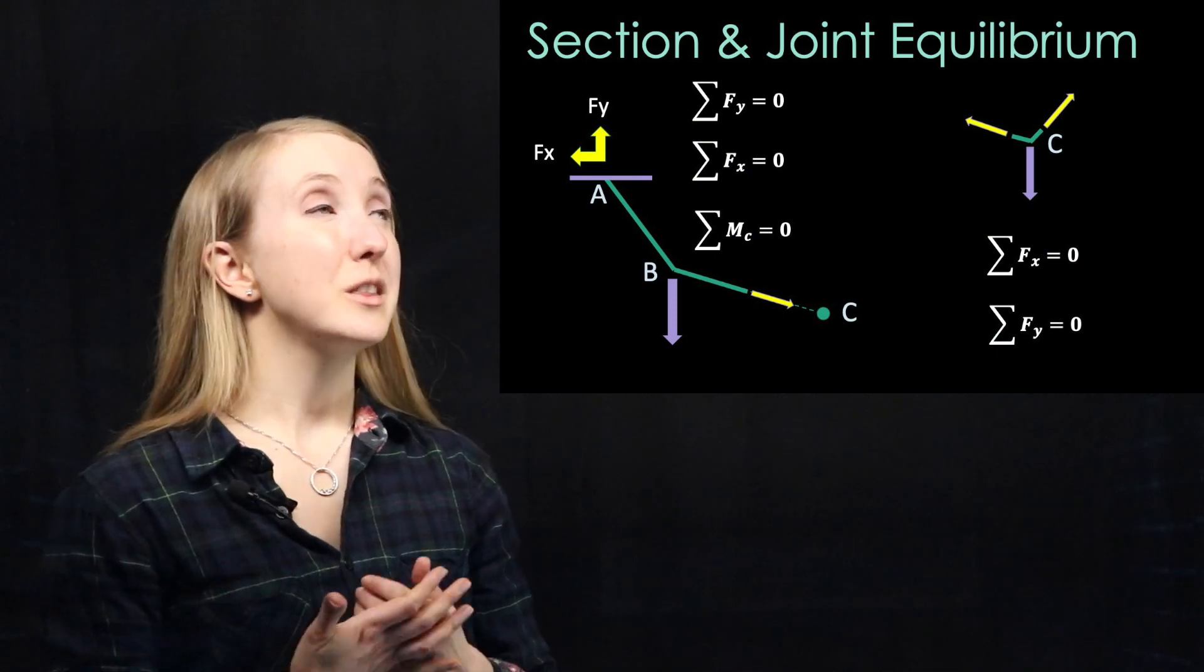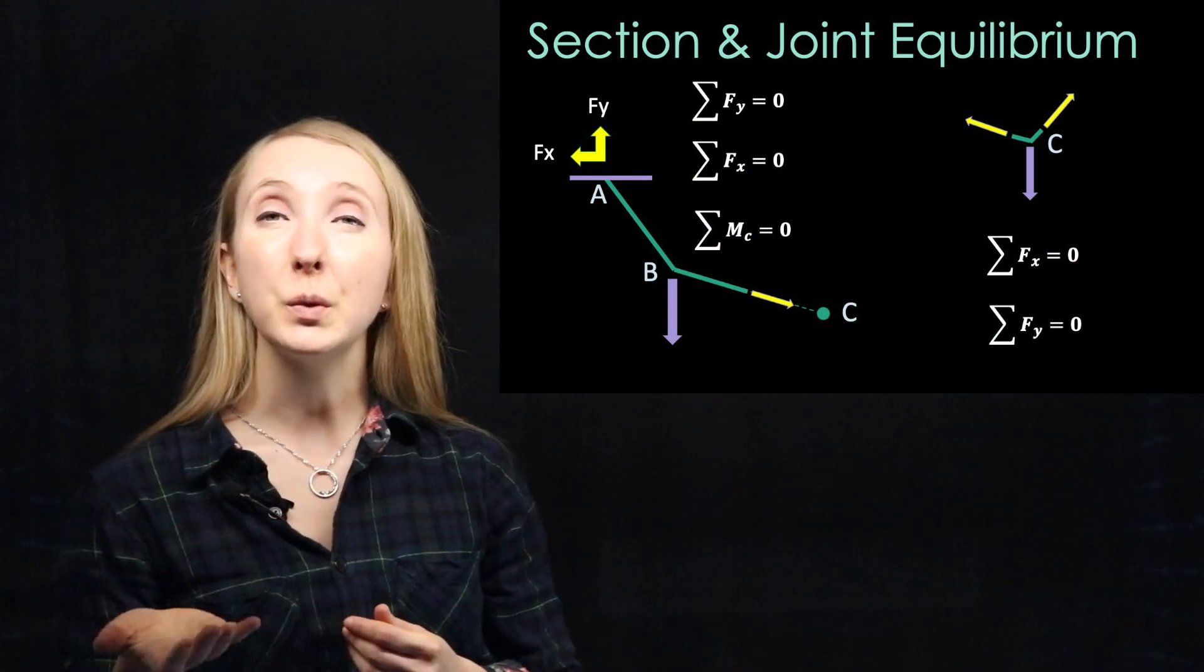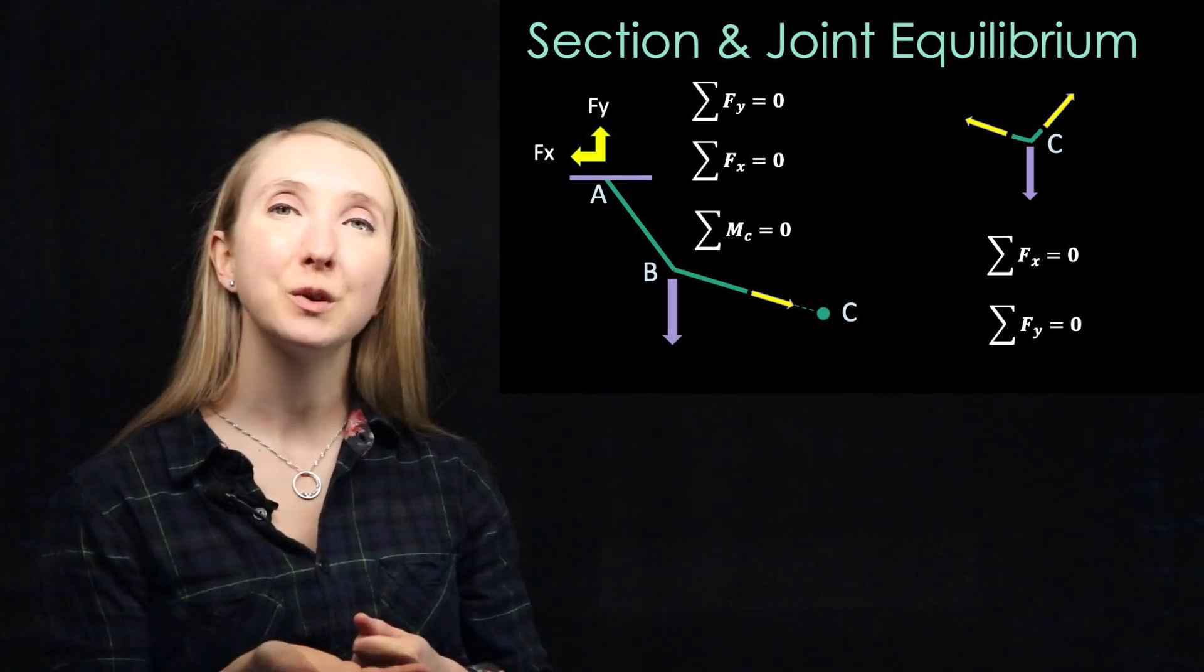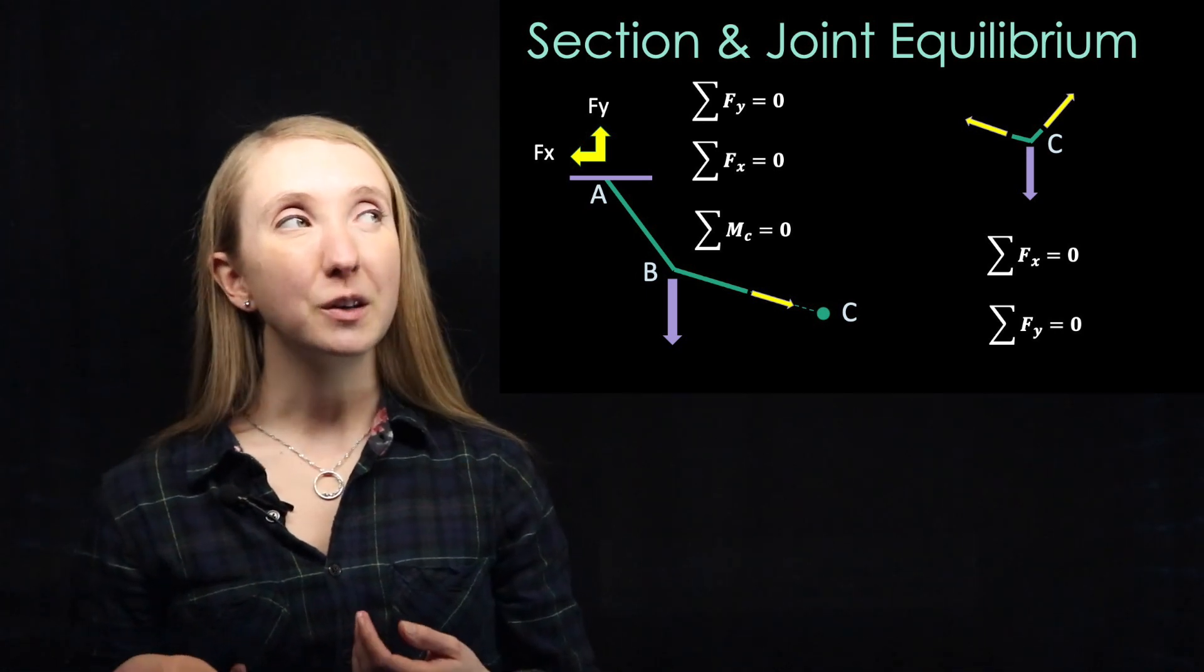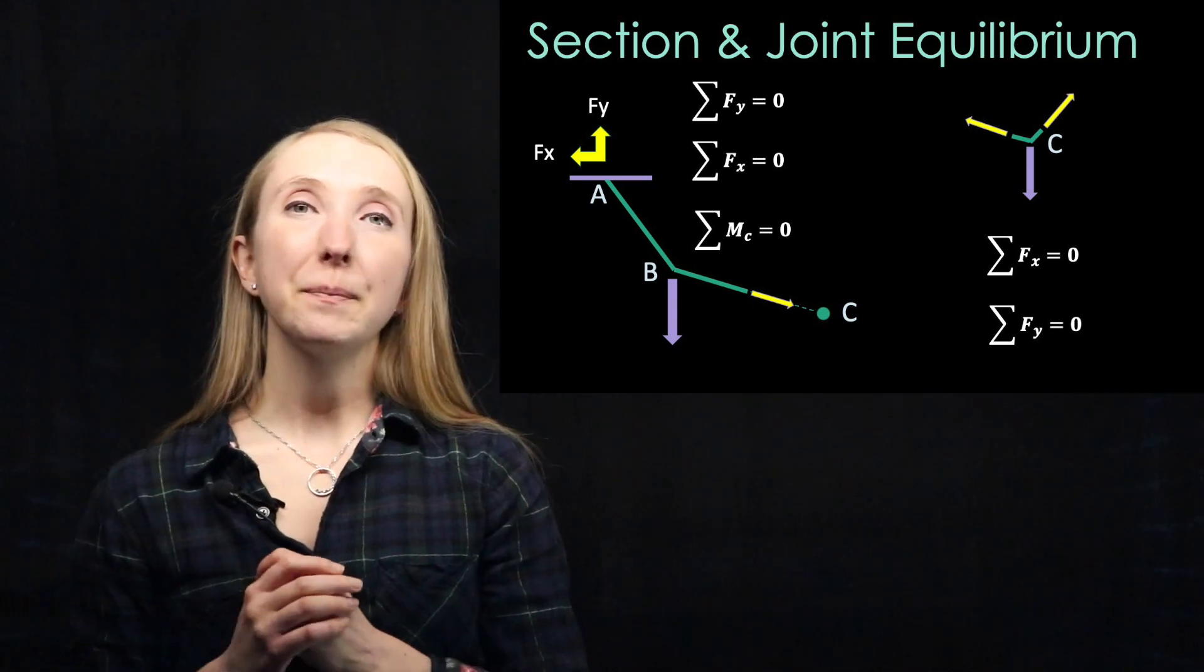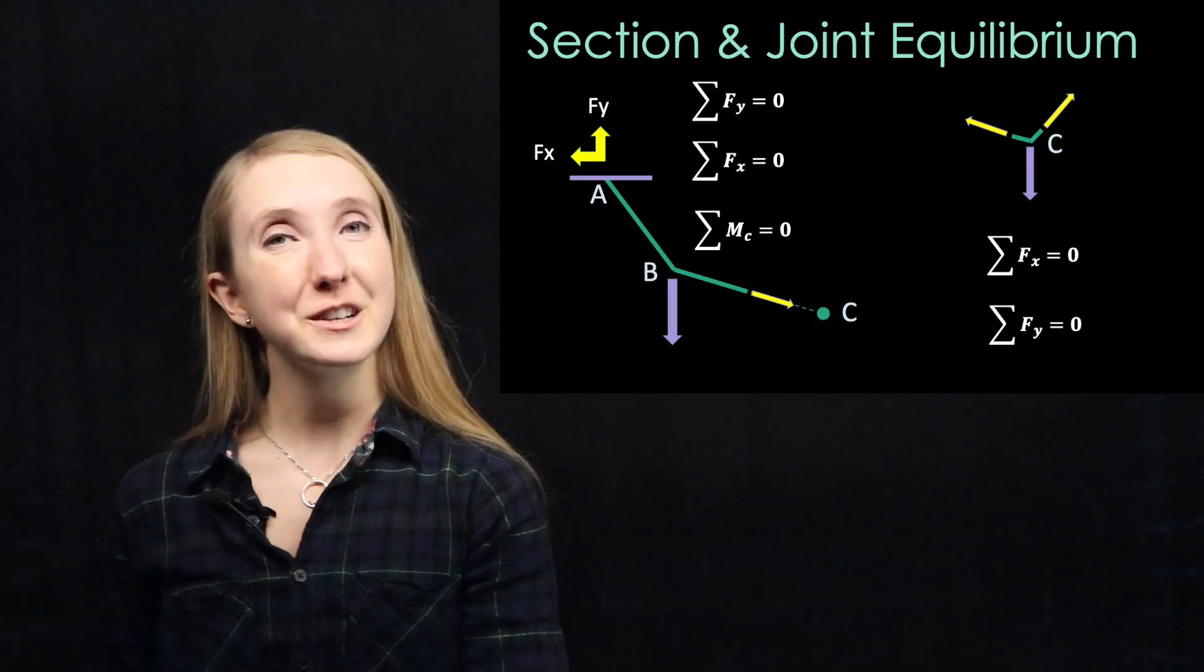Then just like with trusses, you can cut a section and you'll have equilibrium there too, either with moments or your forces in the x and y direction. You can also look at just one joint at a time where you'll have the equilibrium of the x and the y direction having no net forces.